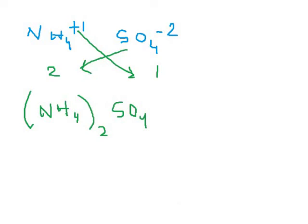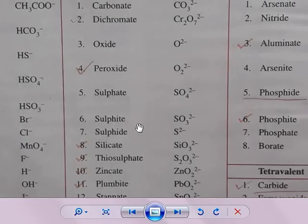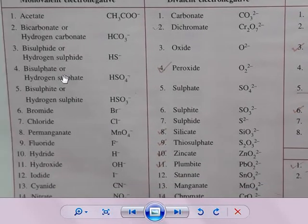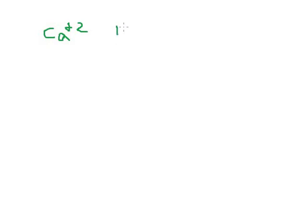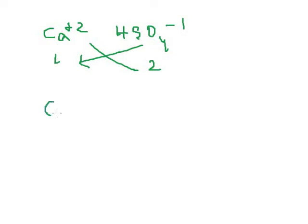Now let's write the formula for calcium bisulphate. Calcium is Ca²⁺. Bisulphate (also known as hydrogen sulphate, HSO₄⁻) is monovalent with charge −1. Cross-multiplying: the 2 from calcium goes below bisulphate, and the 1 from bisulphate goes below calcium. Calcium has subscript 1 — write only Ca. Bisulphate (HSO₄) gets subscript 2, so we put it in brackets: Ca(HSO₄)₂. That is the formula for calcium bisulphate.